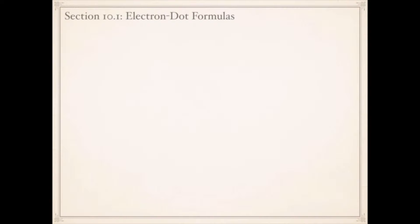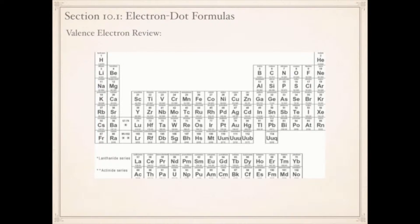Lewis dot diagrams. But in order to do that, we need to review valence electrons. Remember, the periodic table is very helpful because it shows us how many valence electrons elements have. If you're in group one, your alkaline metals and hydrogen, you have one valence electron. If you're with your alkaline earth metals, you have two.